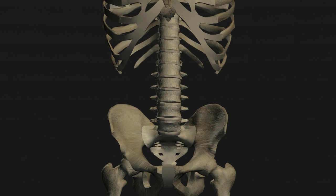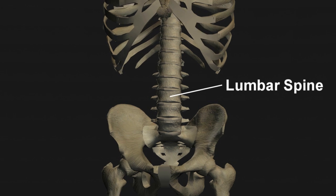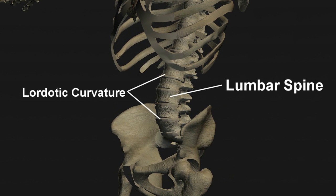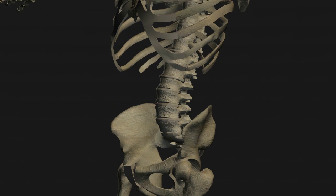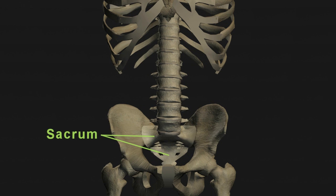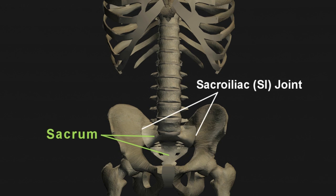The five non-ribbed vertebrae between the chest and the pelvis are known as the lumbar spine and, like the cervical spine, are slightly arched forward in a lordotic curvature. Below the lumbar spine is the sacrum, a series of five fused vertebrae that articulates or connects with the pelvis through the sacroiliac or SI joint. The spine is an amazing biomechanical structure. It is sturdy enough to support the torso and the head, yet flexible enough to allow a complex set of movements including an awesome display of gymnastics maneuvers.